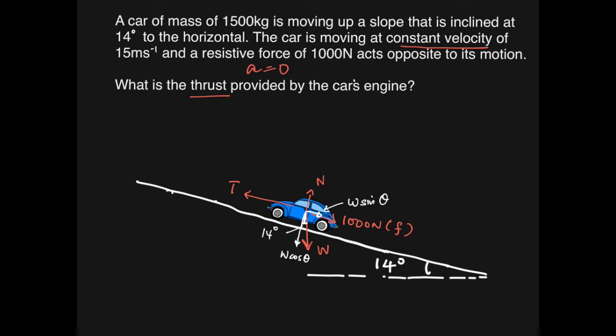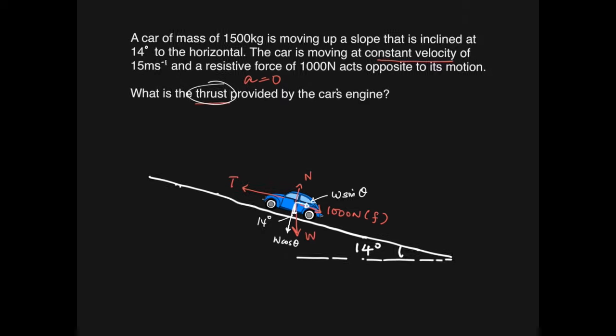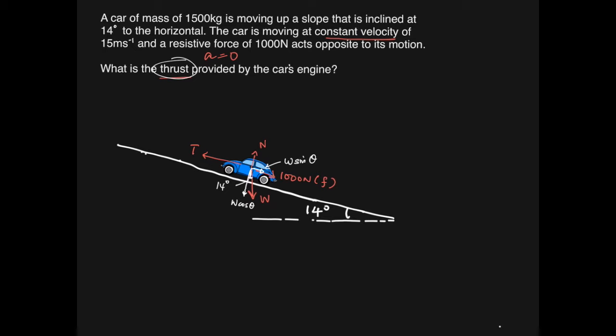Now we are only interested in the forces along the slope because what we're keen to find out is the thrust. So we write an equation. Let's make this a little smaller to give us a bit of space. The thing to take note is this angle theta is nothing but this angle, 14 degrees.